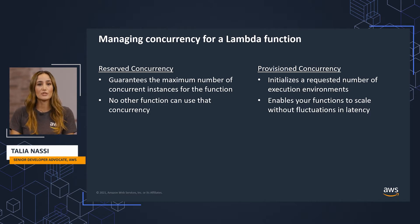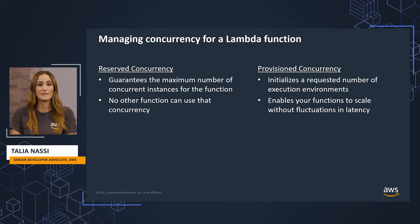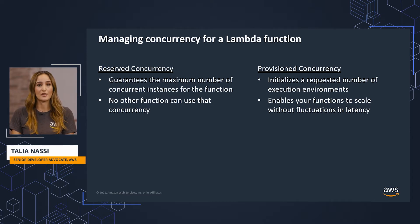There are two types of concurrency controls available: reserved concurrency and provisioned concurrency. Reserved concurrency guarantees the maximum number of concurrent instances for the function. When a function has reserved concurrency, no other function can use that concurrency.